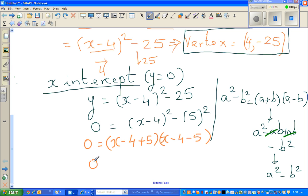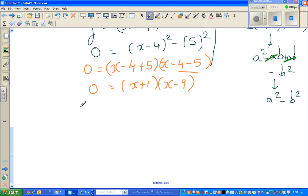So 0 equals, what is negative 4 plus 5? That's 1. And what is x minus 4 minus 5? Minus 4 minus 5 is minus 9. Now I want you to use your logic. I'm going to rewrite this again: x plus 1 times x minus 9 equals 0.